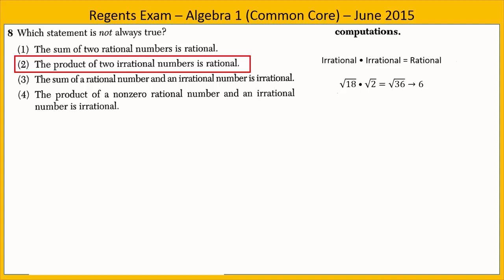That example might make Choice 2 seem like a true statement, but consider this example. The square root of 2 times the square root of 3, both of them irrational, equals the square root of 6, which is irrational. So Choice 2 is the answer.